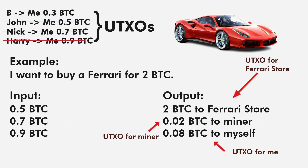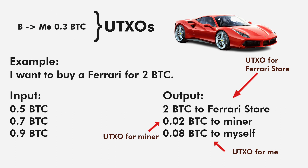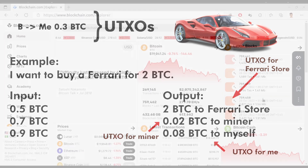Finally, the remaining 0.8 bitcoin will be paid back to myself. Here we have three UTXOs — one for the Ferrari store, one for the miner, and one for myself. My UTXOs will look like this. This is all about transaction fees — I hope you have understood it.